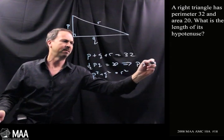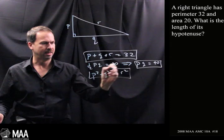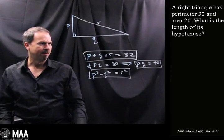So PQ would have to be 40. So PQ is 40. The sum of all three is 32. And I've got that Pythagorean relation.